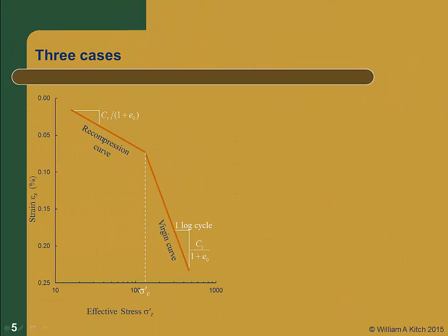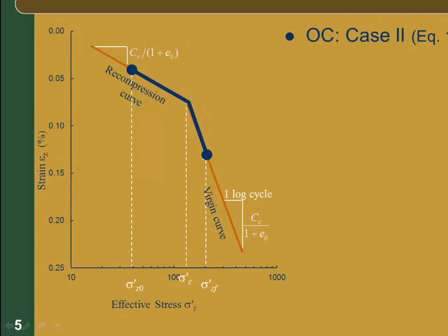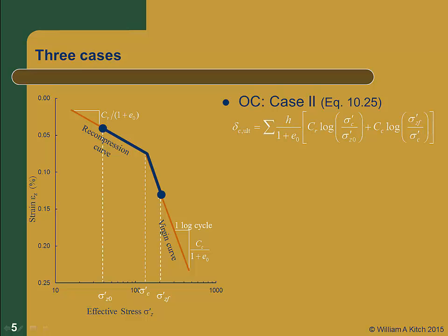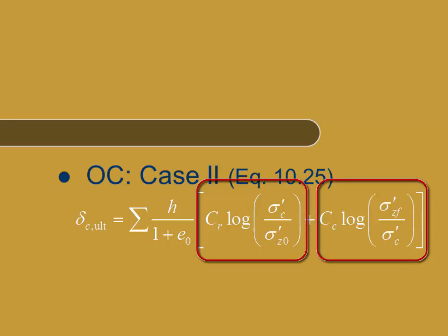We just showed the case of an over-consolidated soil to derive the equation for consolidation settlement, but in reality there are three possible cases that can occur in the field. The case we just used we'll call over-consolidated case 2. In this case, not only is the soil over-consolidated, but the change in vertical effective stress is large enough that the soil will be loaded past the pre-consolidation stress sigma prime c. So the stress path first follows the recompression curve from sigma prime naught to sigma prime c, and then the virgin curve from sigma prime c to the final effective stress sigma prime zf. The equation for consolidation settlement in this case has terms for both recompression and virgin curves. This is equation 10-25 in your text.